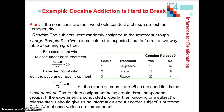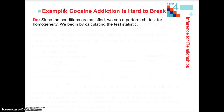Then we check the independence condition. We're sampling without replacement, and each subject is an individual. Unless there were family ties, we can assume independence. We typically use the 10% rule because we're sampling without replacement.